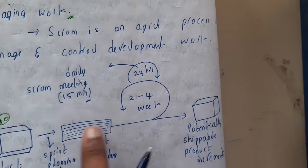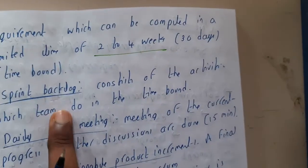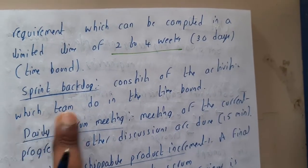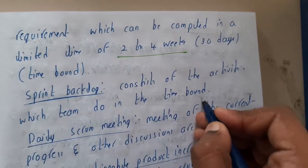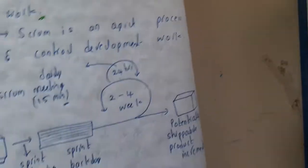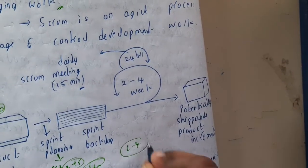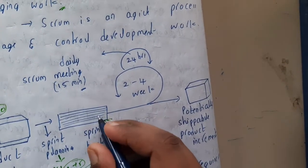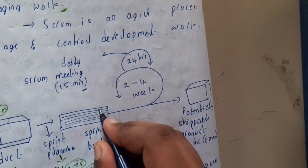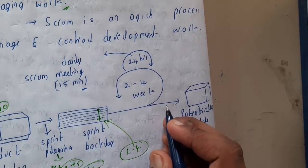Then they will be placing those requirements into sprint backlog. Sprint backlog consists of the activities which the team does in this time bound. Basically, in this 2 to 4 weeks, they need to complete the modules which are in this.